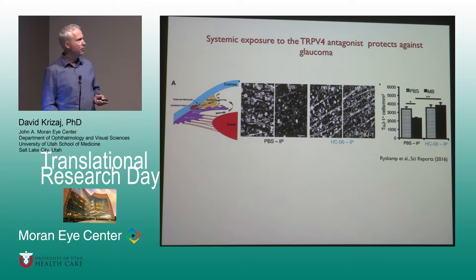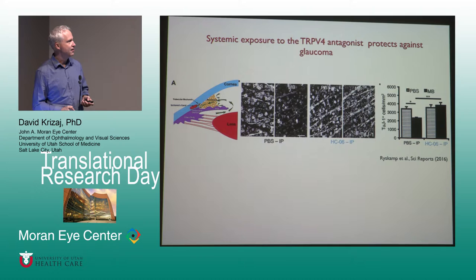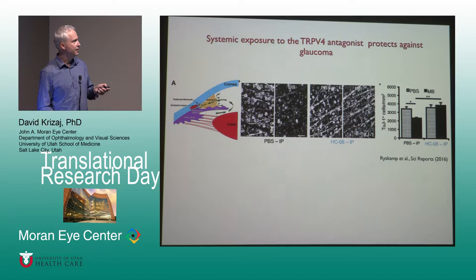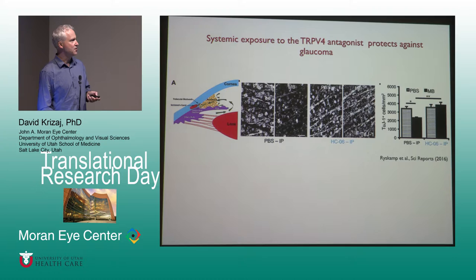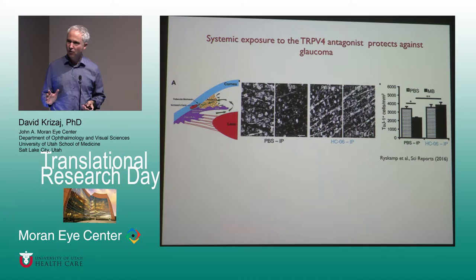What about treatment? Can we protect by systemically treating mice with antagonists or by eliminating the gene? The answer is yes. This is a normal eye treated with vehicle. This is an eye that has experienced elevated IOP — there was a very significant degeneration, about 20% loss of RGCs. In mice that were systemically treated twice a day with a high dose of TRPV4 antagonists, there was no degeneration. We did this many times in dozens of mice and we think this is a fairly solid result. Blocking the mechanosensitive channel blocks the degeneration.